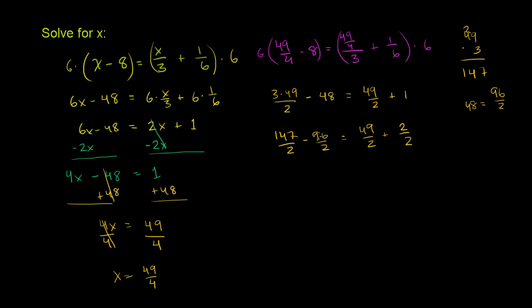So we're going to have, it's going to be, or we're going to subtract 4 less than 100. So it's going to be 147 minus 96 is going to be 51. 51 over 2 is equal to 49 plus 2 is 51 over 2. So it all checks out.